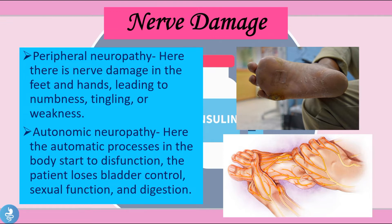Patients with diabetic neuropathy don't heal very well because of high sugar levels, and traumatic sores can become infected over time. They can also suffer from autonomic neuropathy, where autonomic processes start to dysfunction — the patient loses bladder control, sexual function, and begins to have digestive problems.